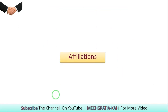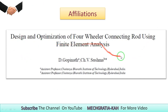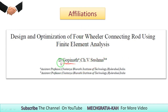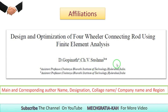After the title, we look at affiliation. The affiliation means — if you look at the example, our title is 'Design and Optimization of Four-Wheeler Connecting Rod using the FEA, Finite Element Analysis.' The affiliation refers to the authors. You can see there are two authors — the first author is the main author and the second is the corresponding author.